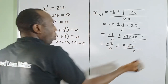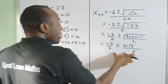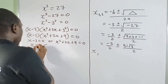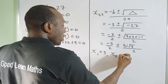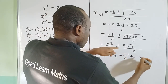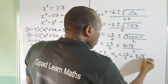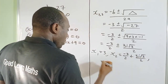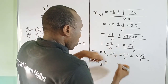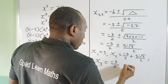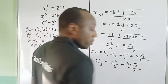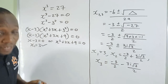So in conclusion: x₁ = 3, x₂ = (−3 + 3i√3) / 2, and x₃ = (−3 − 3i√3) / 2. These are all three roots. If you enjoyed this video, please subscribe to the channel and like the video for more content like this.